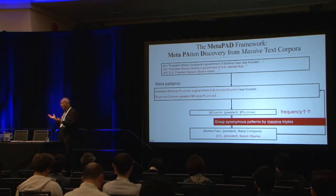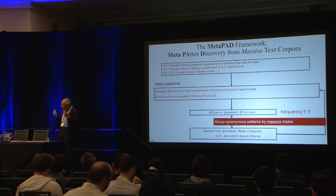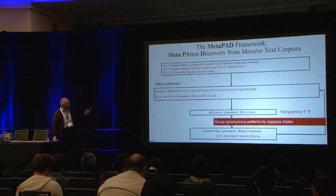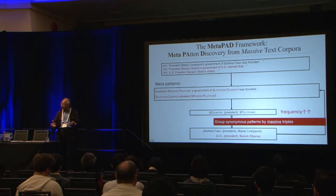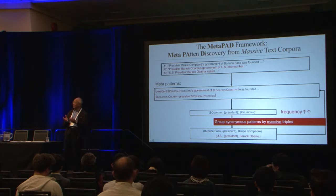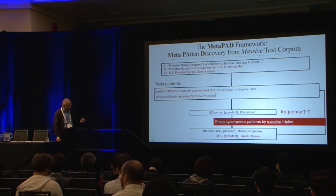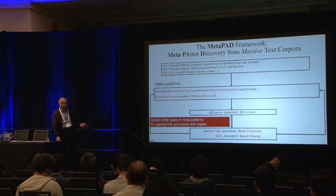Once you find synonymous patterns, you can fill in the rare things. That's exactly how humans learn — you get a new country or name you've never heard of, but you fully understand the newspaper because of the pattern. The machine can do this the same way. You get a meta pattern, find synonymous patterns because so many things repeat, and those meta patterns are essentially the same — they express the same meaning.